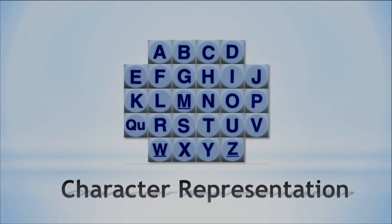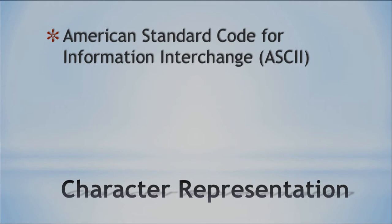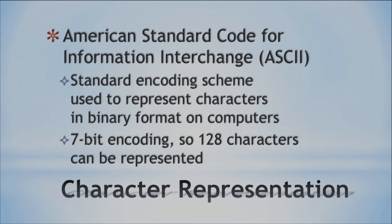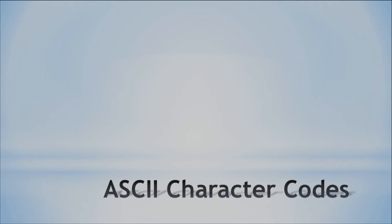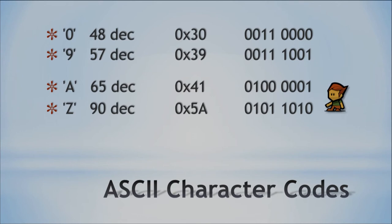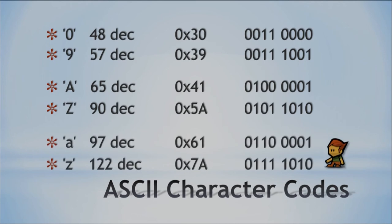Let's talk about character representation. We used to have what's called ASCII — American Standard Code for Information Interchange — a standard way to represent binary format on computers with characters. It's 7-bit encoding, so we can represent 2 to the 7th power, which is 128 different characters. For example, the character 0 is 48 decimal, or 30 hexadecimal, or 00110000 in binary. The letter A is 65 decimal or 41 hexadecimal, and lowercase a is 97 decimal or 61 hexadecimal, stored as 01100001.